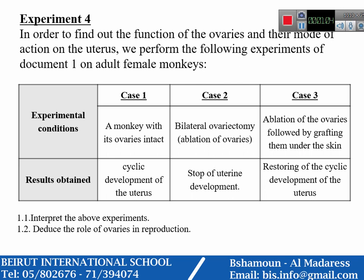In experiment four, in order to find out the function of the ovaries and their mode of action on the uterus, experiments were performed on adult female monkeys. In case one, where the monkeys have their ovaries intact, there is no cyclic development of the uterus. However, bilateral ovariectomy leads to the stop of uterine development.